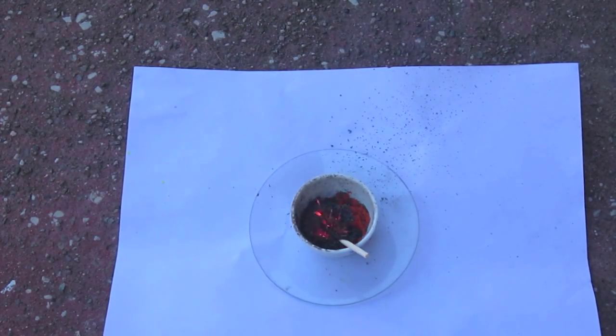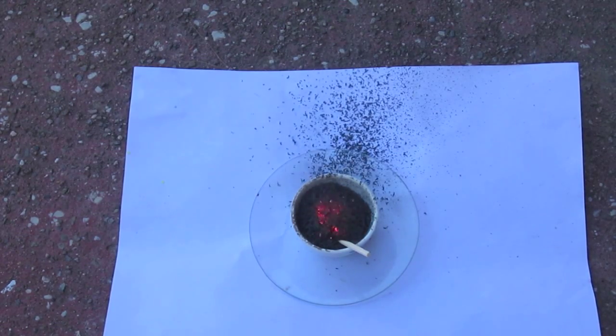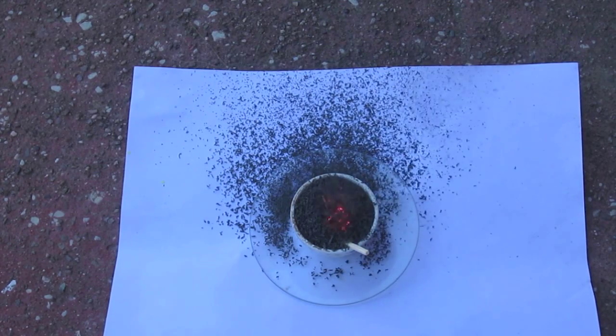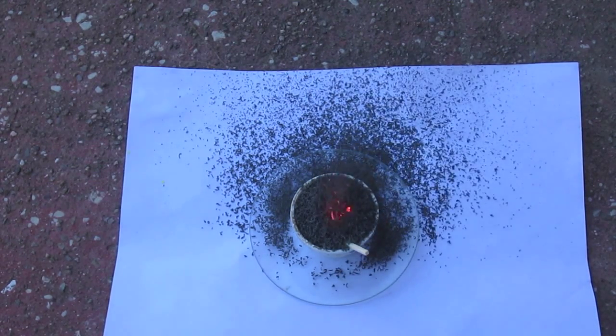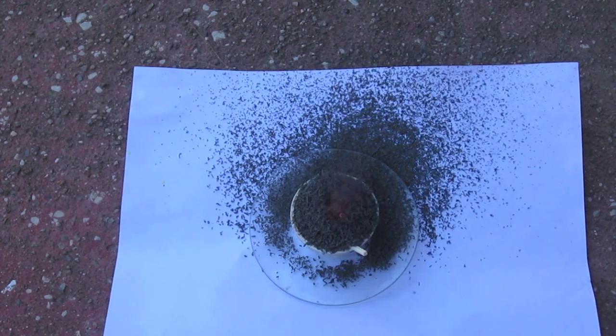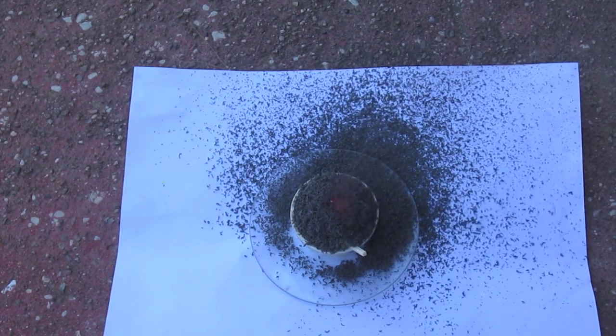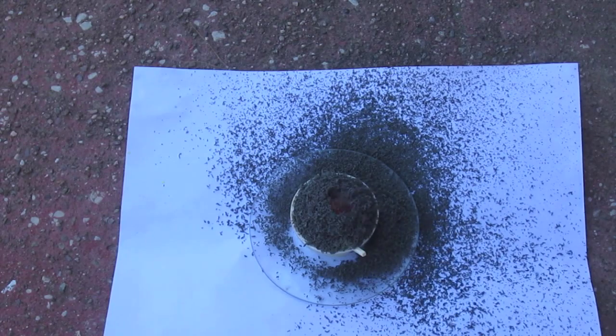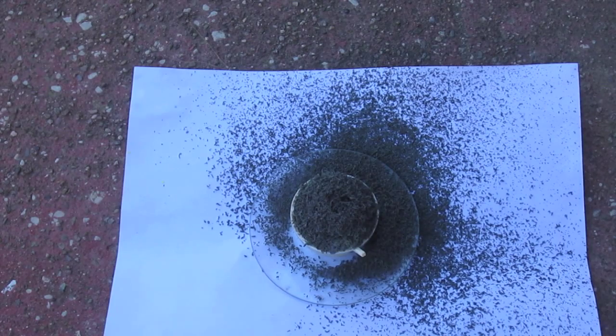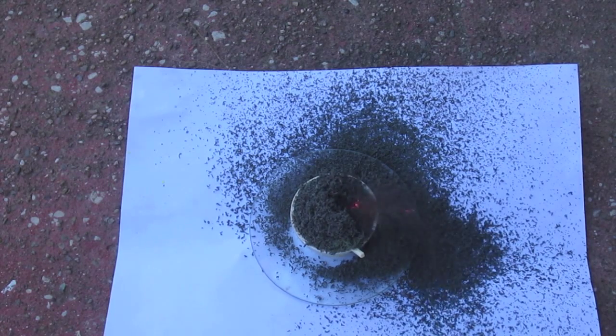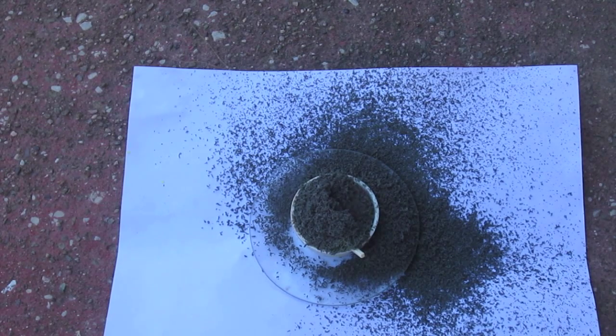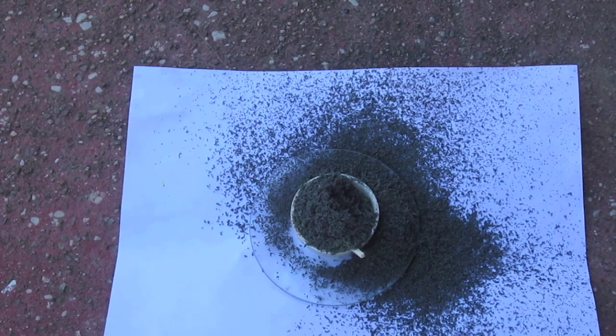The reason I used ammonium dichromate for this volcano experiment, as it's sometimes called, instead of potassium chromate or potassium dichromate, is that ammonium dichromate is exceptionally unstable, more so than other dichromate or chromate salts, because the dichromate anion is oxidizing, and the ammonium ion is reducing. So when you have an oxidizer and reducer all in one salt, then that will make that salt very unstable. So doing this experiment does not work nearly as well with other dichromate or chromate salts.